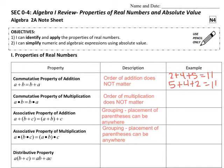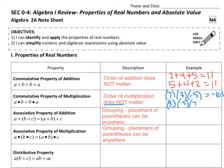For the commutative property of multiplication, commutative just means that the order does not matter. So if I multiply 7 times 3 times negative 5, I'm going to get negative 105. Or if I put those numbers out of order — 3 times negative 5 times 7 — I should also get negative 105. Commutative means order does not matter, whether it's addition or multiplication.